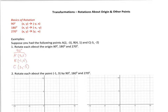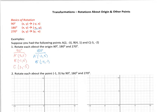Now let's do 180 degrees. For 180, I keep the X and Y the same but just put negatives on them. So A prime ends up at (-2, 3). B prime ends up at (-4, -1). And C prime ends up at (5, 2).